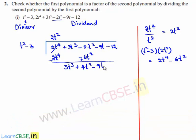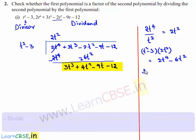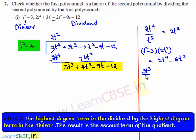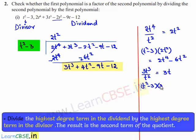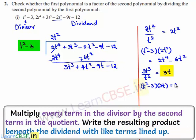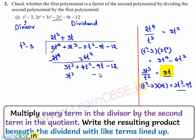This becomes minus 9t minus 12. The new dividend is 3t³ plus 4t² minus 9t minus 12, and the highest degree term is 3t³. When divided by t², we get 3t, which is written at the place of the quotient. t² minus 3 multiplied by 3t gives 3t³ minus 9t.